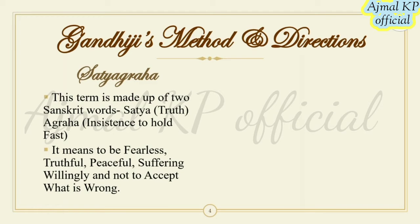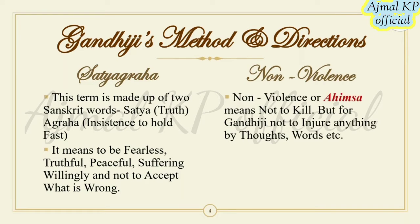Now we will discuss the remaining things that happened in the second phase of India's Freedom Struggle. Gandhiji's methods and directions: Satyagraha — the term is made up of two Sanskrit words, Satya and Agraha, meaning insistence to hold fast. It means to be fearless, truthful, peaceful, suffering willingly, and not to accept what is wrong. Non-violence or Ahimsa means not to kill, but for Gandhiji, not to injure anything by thoughts, words, etc.